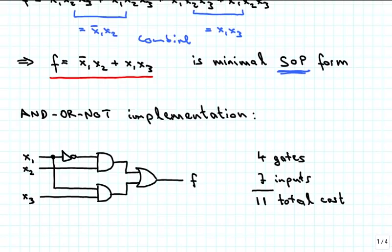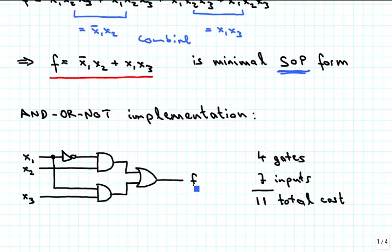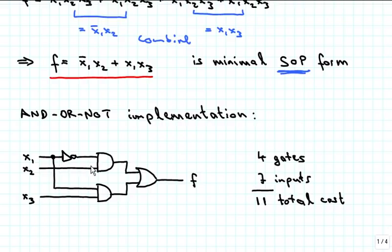The straightforward AND/OR/NOT implementation is shown here. We take x1, invert it using an inverter, and AND it with x2 — that's the upper AND gate. Then we take x1 and x3 and AND those together — that's the lower AND gate. Then we OR the two results to get function f. The cost is counted as the number of gates (4) plus the number of gate inputs: 1 for the NOT gate, 2+2 for the AND gates (total 5), and 2 for the OR gate — giving 7 inputs and a total cost of 11.